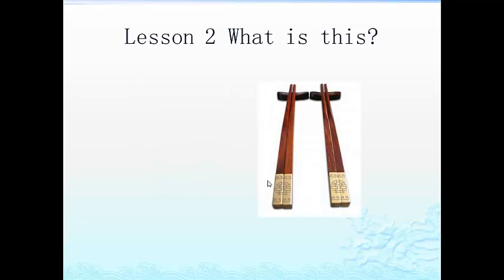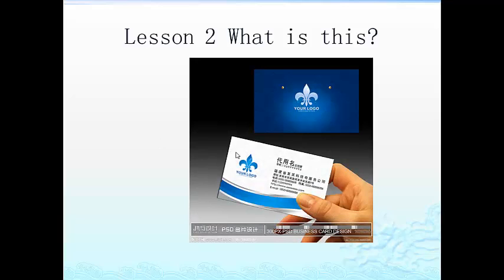筷子. Repeat after me: 筷子. 筷子 means chopsticks. 名片. 明 means name, 片 means card. 名片 means name card or business card.